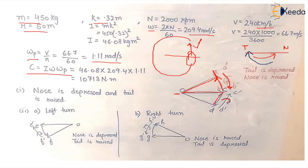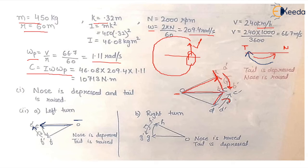For the next case, the engine spins clockwise and the viewer is at the front end. Applying the right-hand screw rule, the initial angular velocity vector is shown as OE. When taking a left turn, the reaction couple vector F'E' is determined, and applying the right-hand screw rule shows it acts in the clockwise direction — so the tail is raised and the nose is dipped. For a right turn the reaction couple is counter-clockwise, so the nose is raised and the tail is dipped.